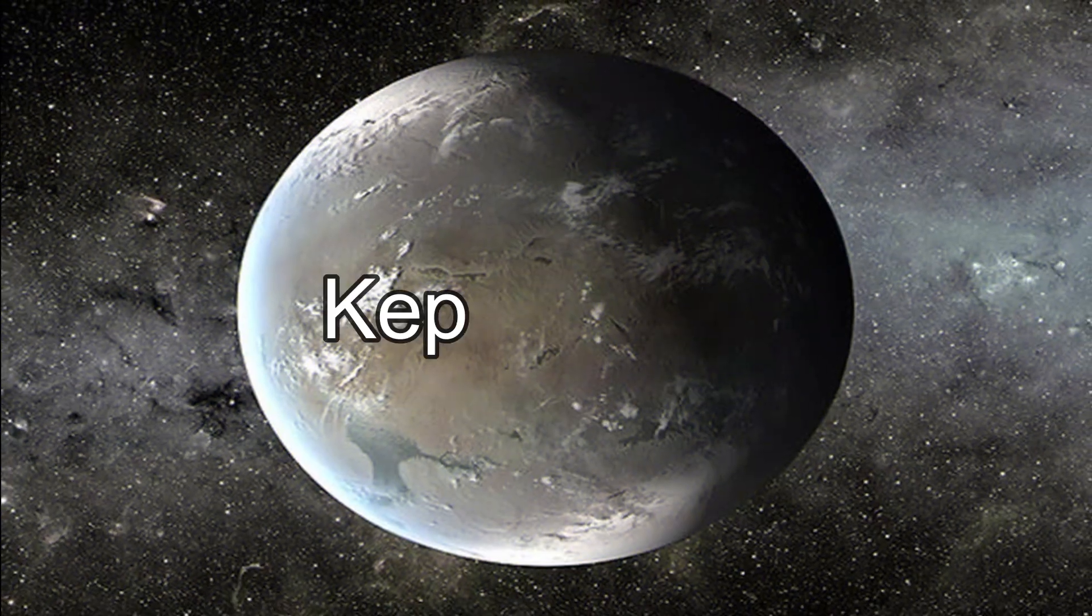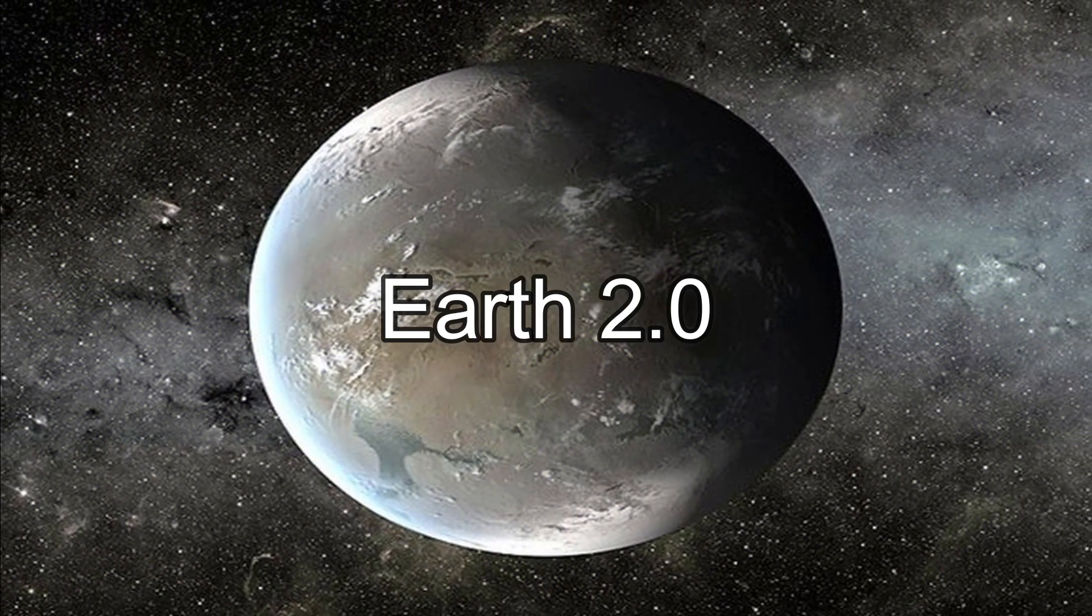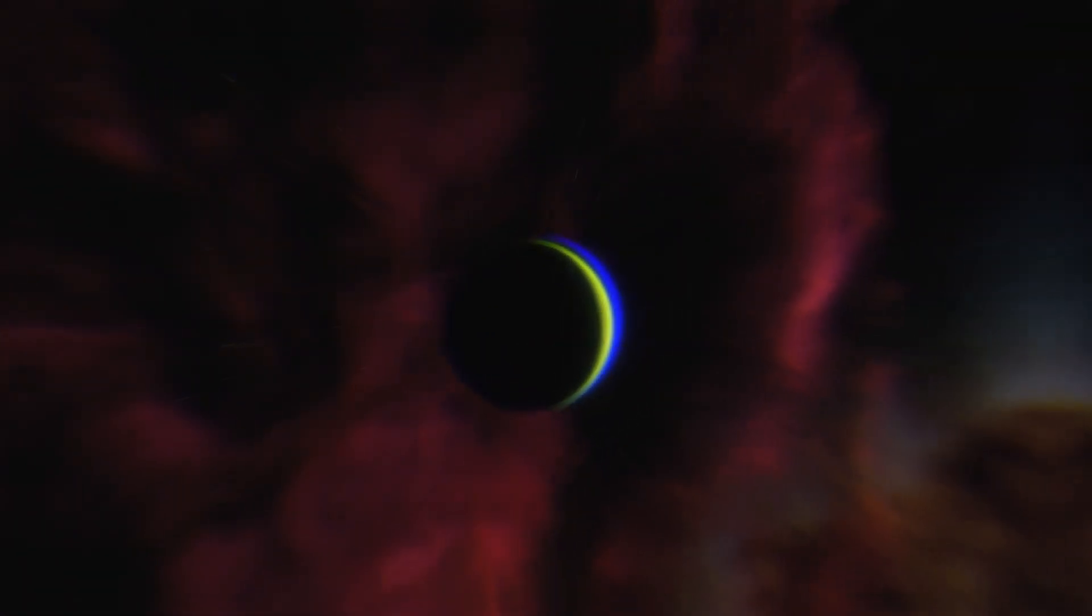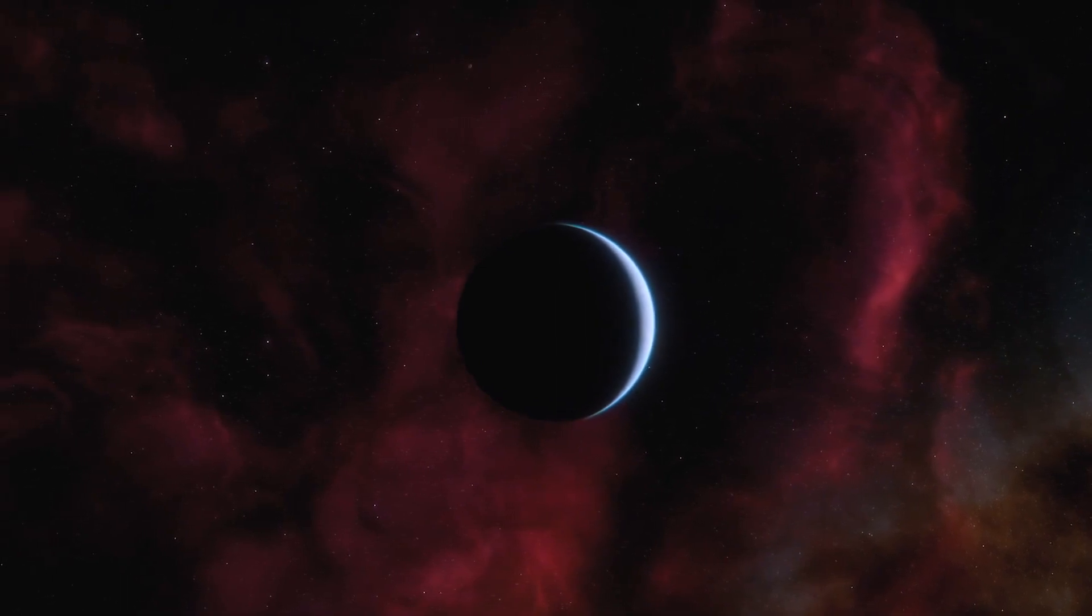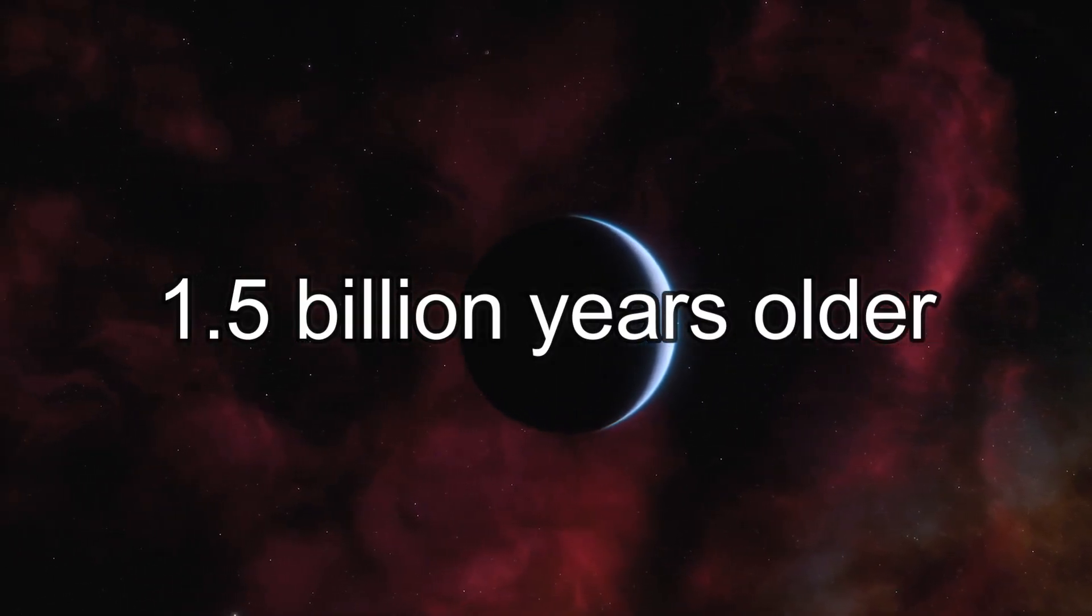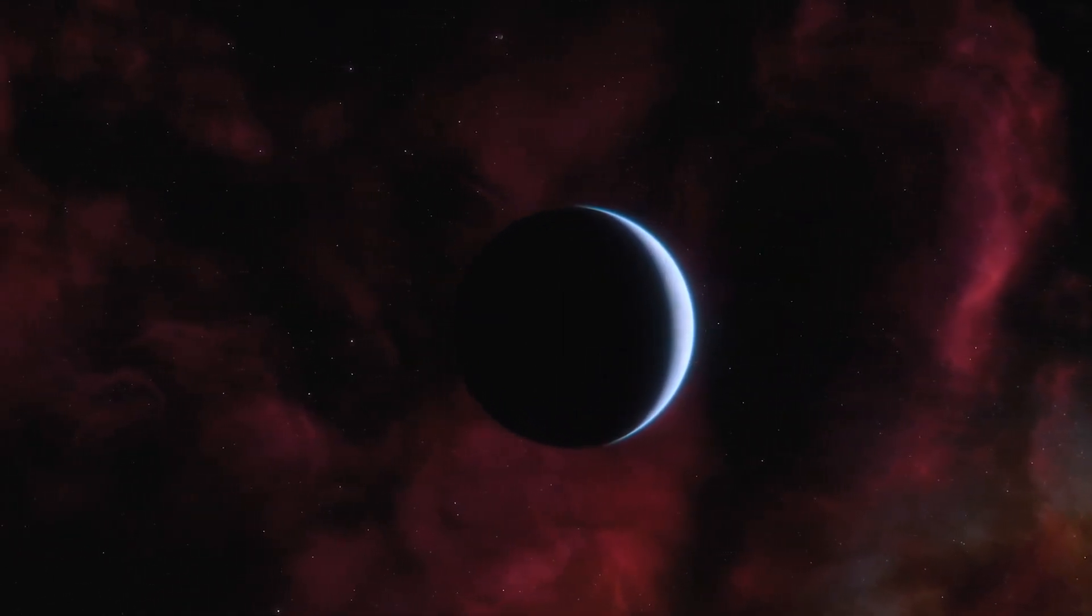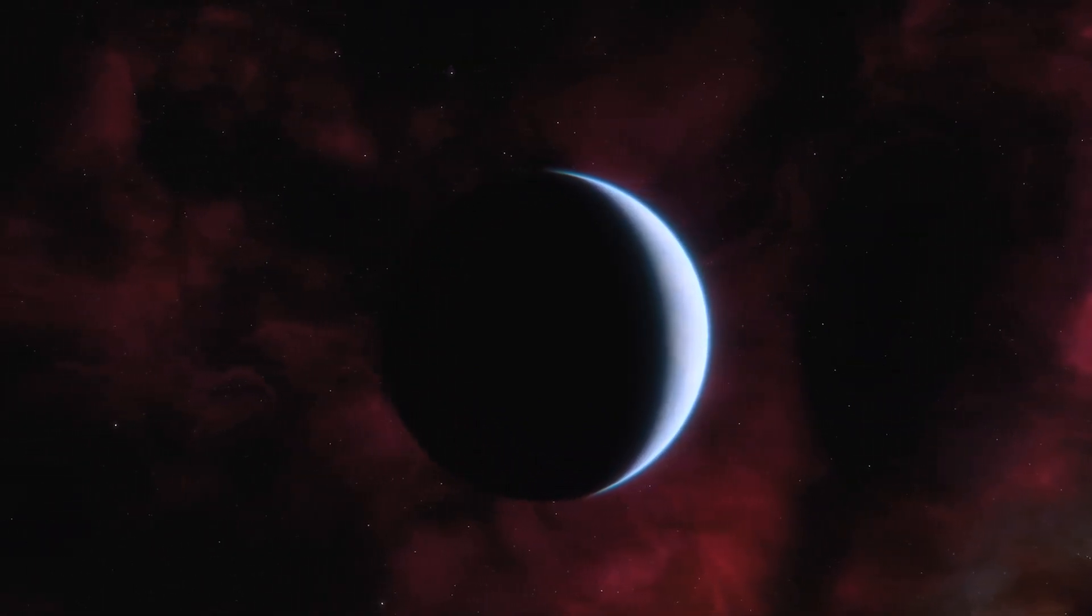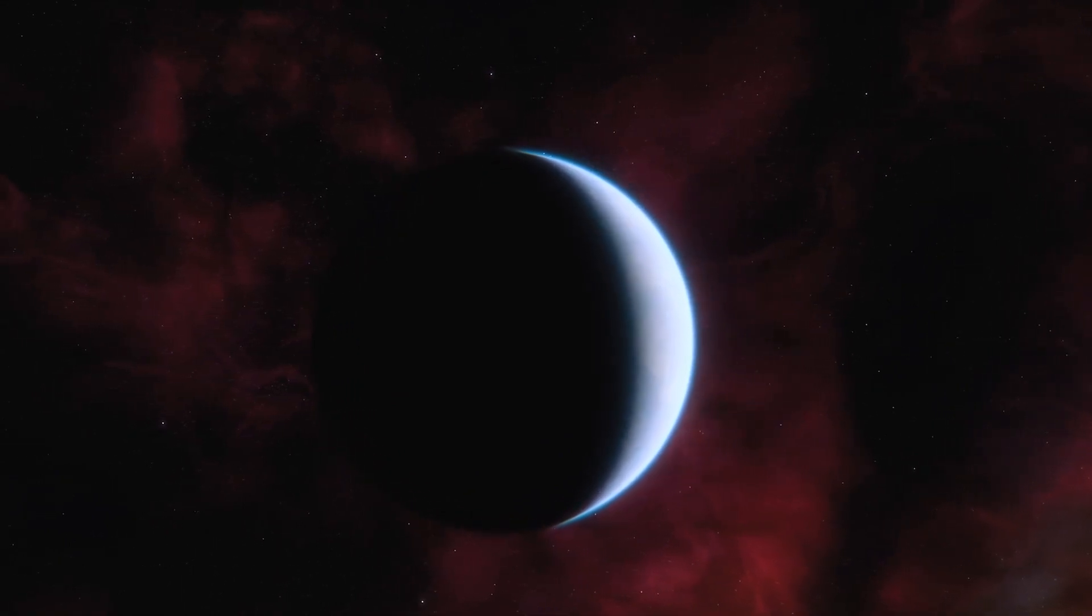Kepler 452 b, sometimes known as Earth 2.0, is another possible superhabitable planet. It circles a G star, which is comparable to our sun, but 1.5 billion years older and slightly larger. Some researchers suggest that an ancient civilization may have existed on Kepler 452 b or on the Moon orbiting it.